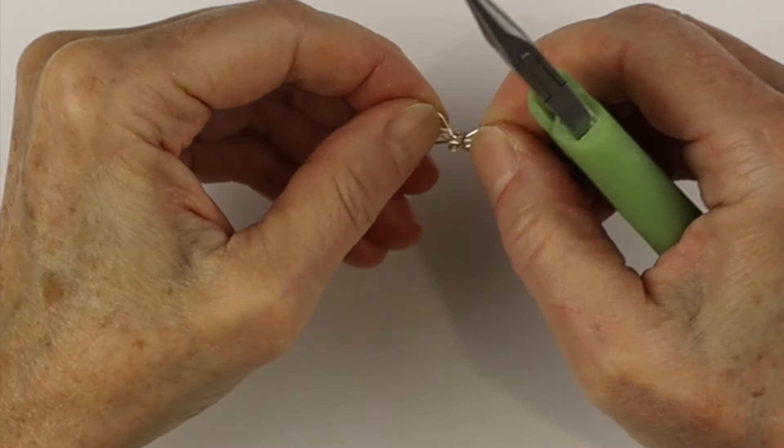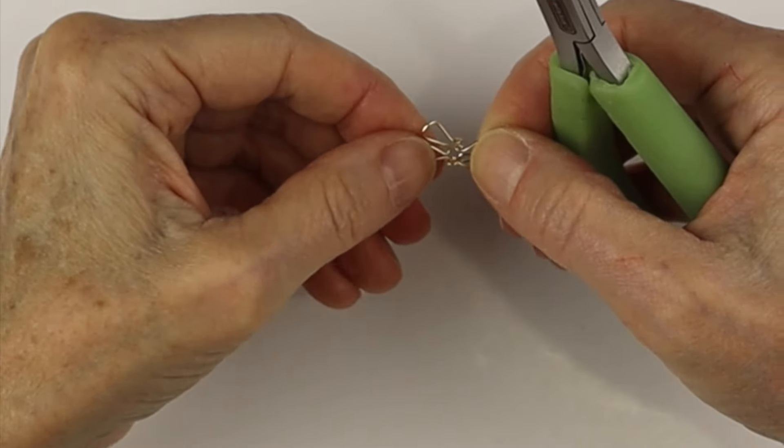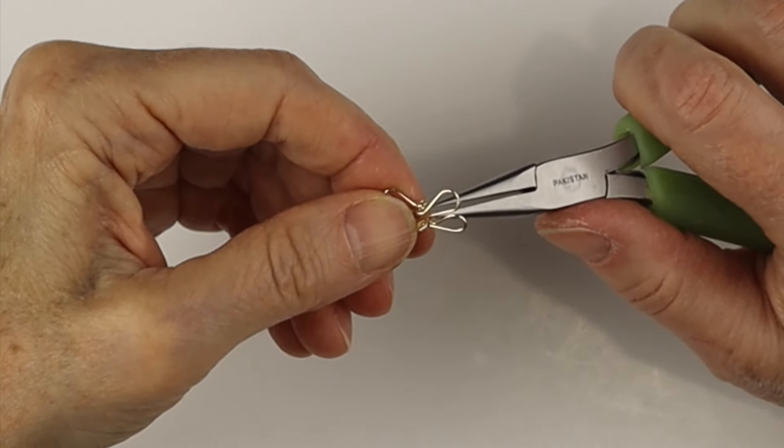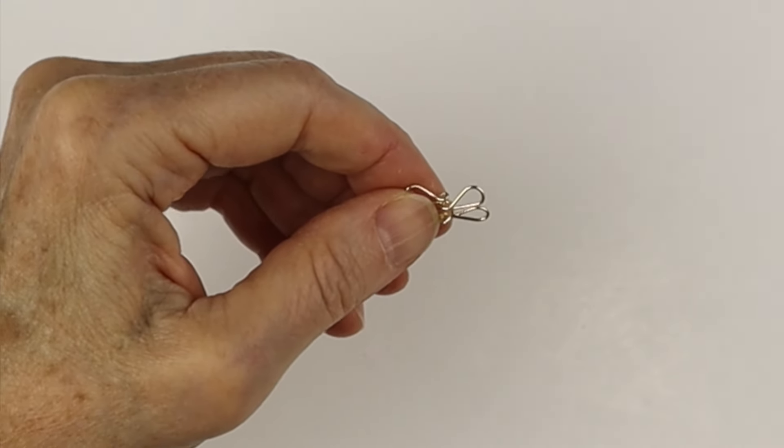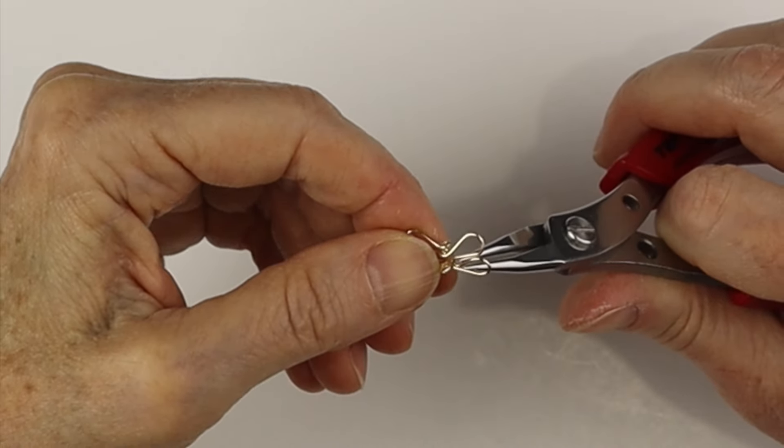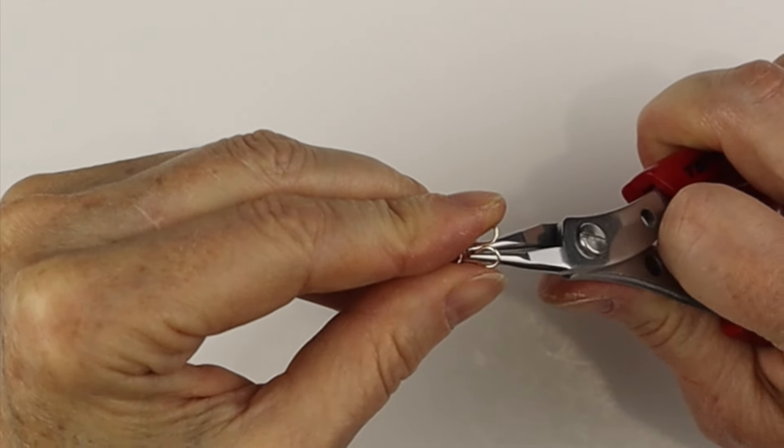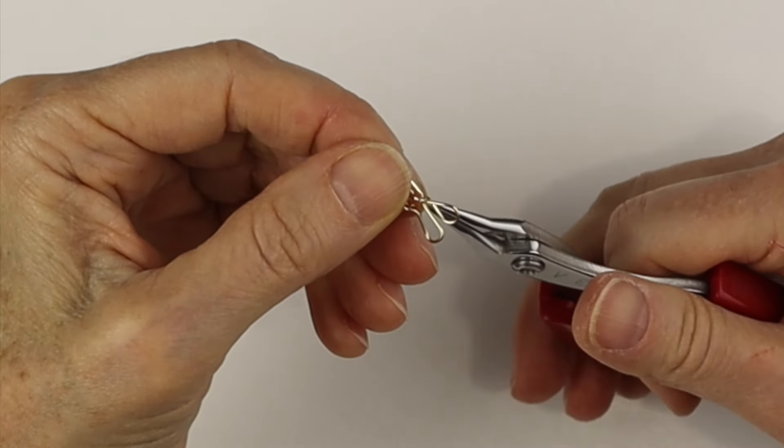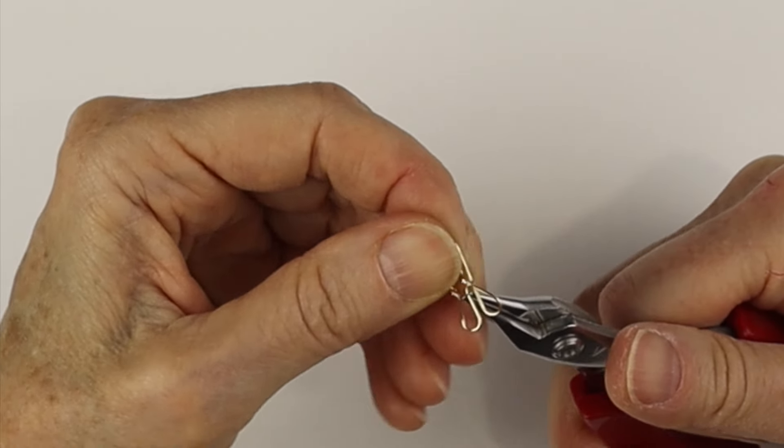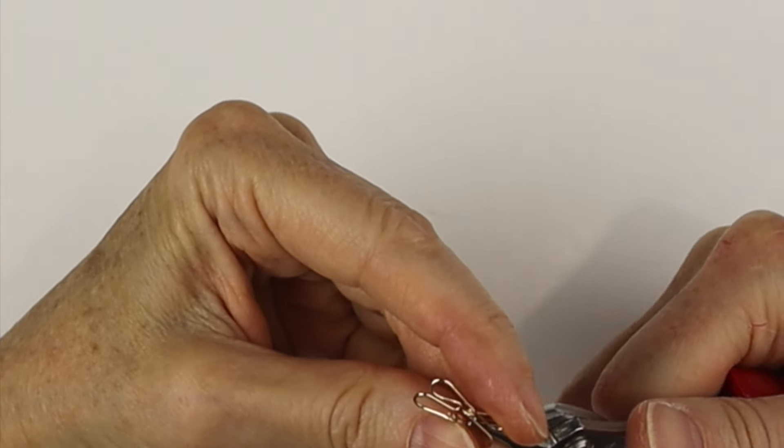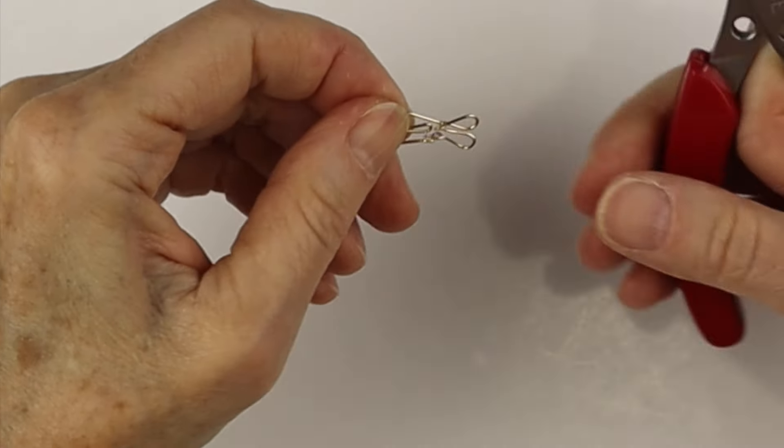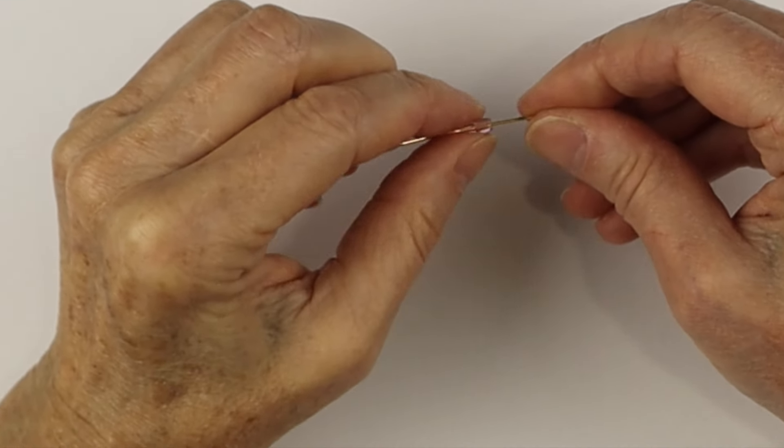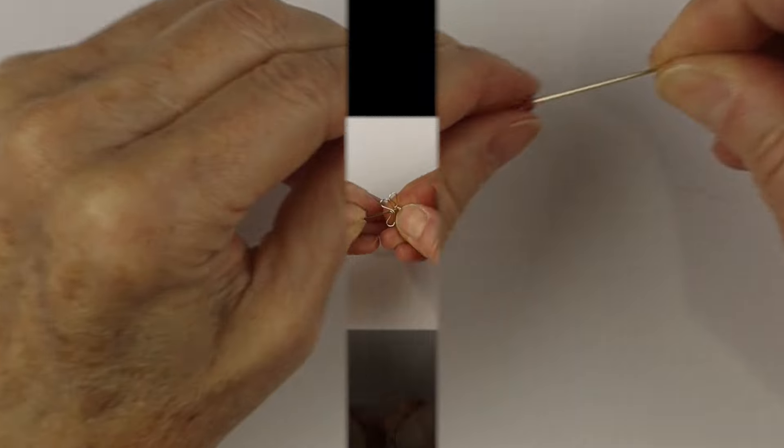Now you see all the loops are perpendicular to the wings, so we'll be able to slide in that head pin. Do any little adjustments that you need. You can grab your round nose pliers just to make sure the wings are nicely symmetrical and centered. Sometimes it just takes a little bit of wiggling for them to be just right.